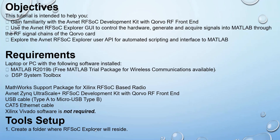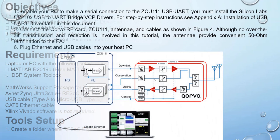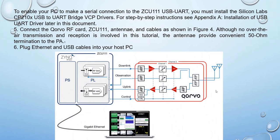For tool setup, create a folder where RF SOC Explorer will be installed. The block diagram shows the ZCU111 board, the CORBO card, and the PC with RF SOC Explorer software installed. To enable your PC to make a serial connection to the ZCU111 via USB, you must install the Silicon Labs CP210x USB-to-UART driver. Connect the CORBO RF card to the ZCU111. The antenna provides a convenient 50-ohm transmission path to the power amplifier.